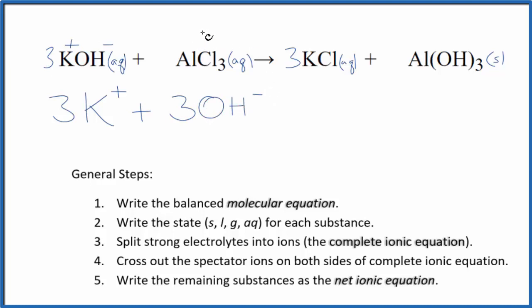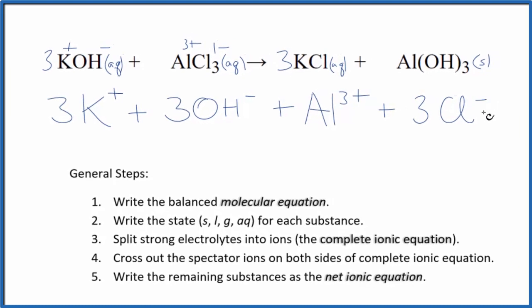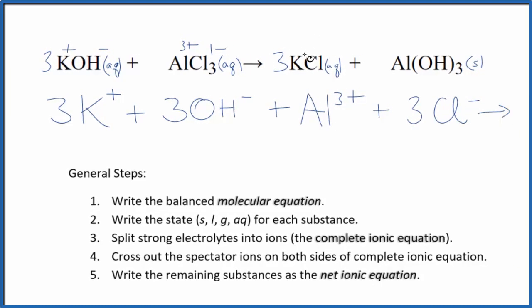Aluminum is in group 13, sometimes called 3. That has a 3 plus ionic charge. Chlorine, one minus. So I have the aluminum ion. And then I have three of these chloride ions. And those are the reactants in our net ionic equation.